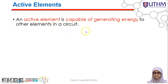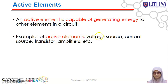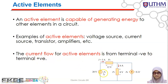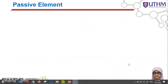An active element is capable of generating energy to other elements in a circuit. Examples of active elements include voltage sources, current sources, transistors, and amplifiers. For active elements, the current flows from the negative terminal to the positive terminal — as seen in both the voltage source and current source symbols shown here.